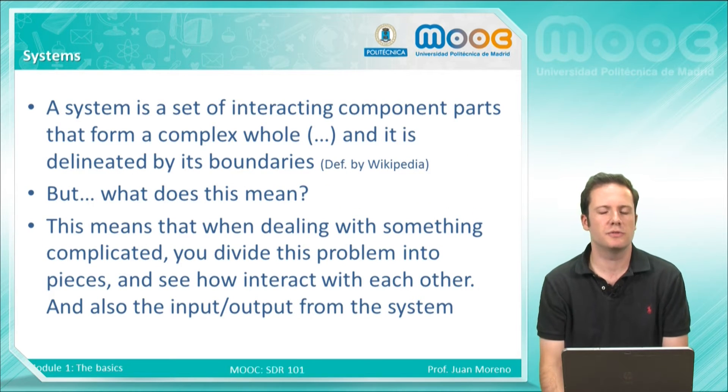The canonical definition of system is that it's a set of interacting component parts that form a complex whole and it's delineated by its boundaries. This is the definition by Wikipedia, but what does this really mean? This means that when dealing with something complicated, you divide this problem into pieces and see how these pieces interact with each other, and also you need to know the input and the outputs from this system.